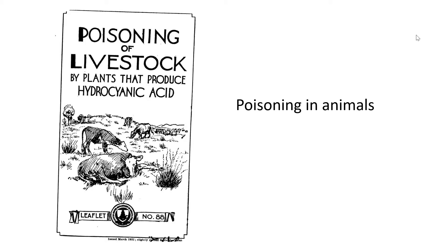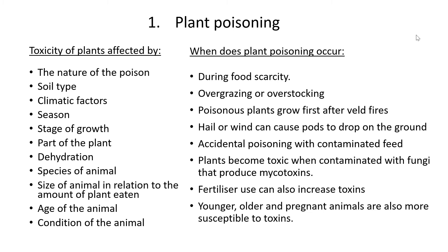Mainly some of these poisons are found in plants, and other things are like salts that animals ingest, so it's mainly about ingestion of poisons. Firstly we're going to look at plant poisoning. Something to remember is that the toxicity of plants can be affected by certain characteristics — not all plants are equally poisonous, and the same species of plant is not always equally poisonous throughout all stages of its life cycle.